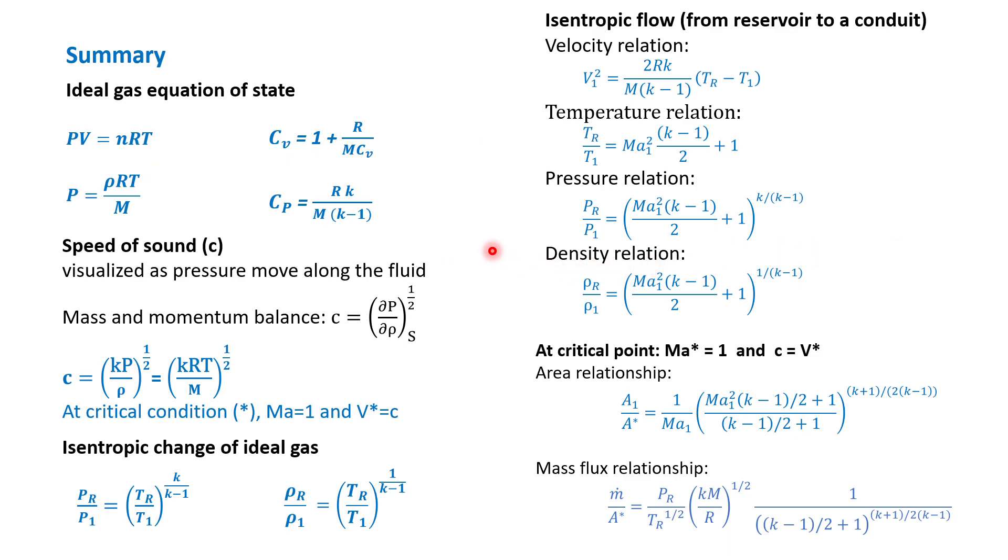We know that in high velocity gas flow, we assume ideal gas behavior, then we can apply some of the equations of state and heat capacity relationships. Also we assume the heat capacity is constant. We have derived the speed of sound and the isentropic change of ideal gas equation.